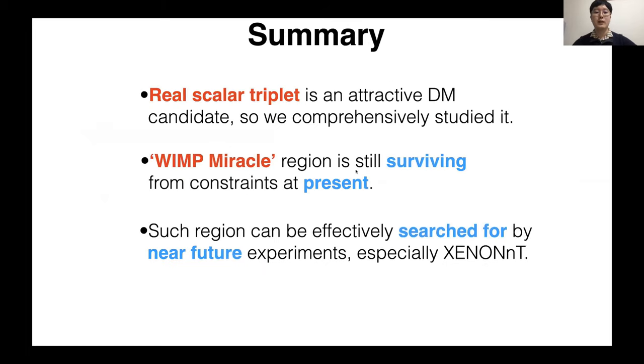In summary, real scalar triplet is an attractive dark matter candidate, so we comprehensively studied it. And the miracle region is still surviving from constraints at present. Finally, such region can be effectively searched for by near future experiments, especially XENONnT. Thank you for listening.